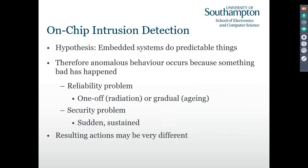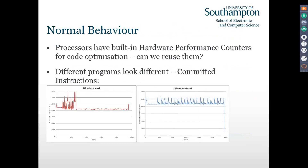One of the hardware performance counters is committed instructions. A lot of these counters give you similar information — committed instructions or cache miss rates give very similar results in many respects. You can see that running one benchmark — a QSort program — there is a particular pattern of behavior. If we're running a different benchmark, there's a different pattern of behavior. They're very obvious and very different sorts of things.